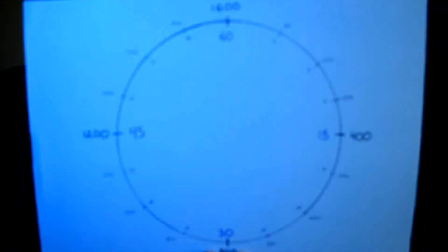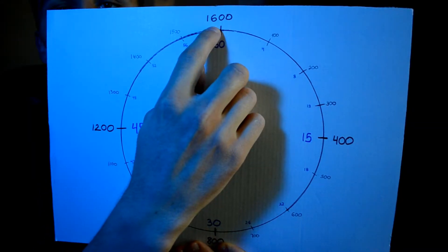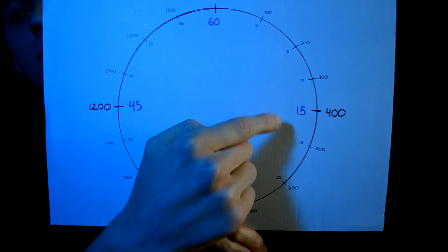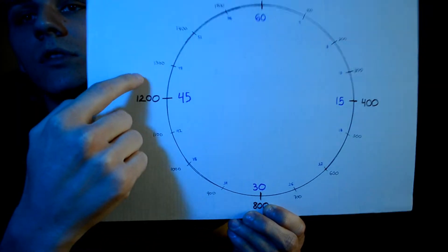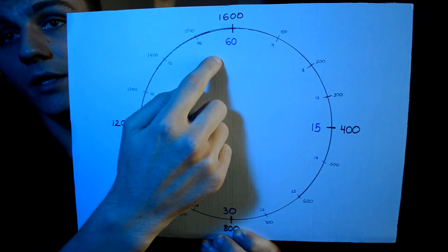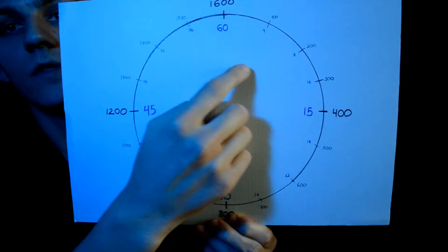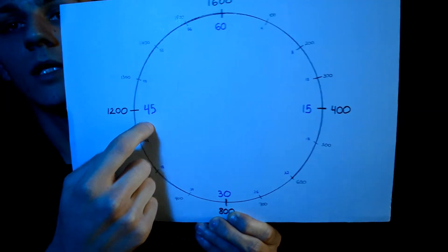Let's look at the clock you will reference to figure out how many drops you need per minute. At the top of the clock we have 1,600 micrograms. Going around the clock: 100, 200, 300, 400, 500, 600, 700, 800, 900, 1,000, 1,100, 1,200, 1,300, 1,400, 1,500, back to 1,600 micrograms. On the inside of the clock we have the amounts for drops per minute — this is our microdrip set. So we have 15 drops per minute, 30, 45, and back to 60.